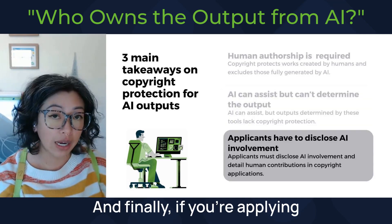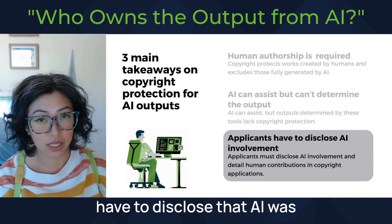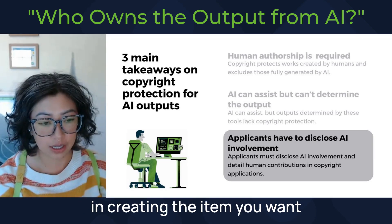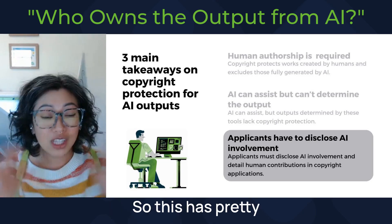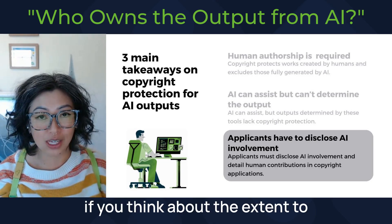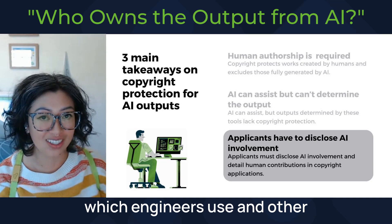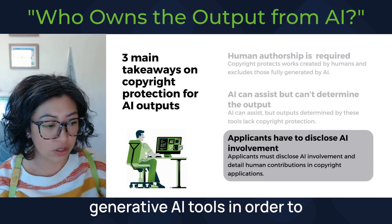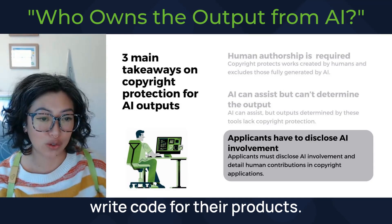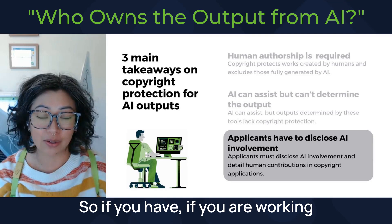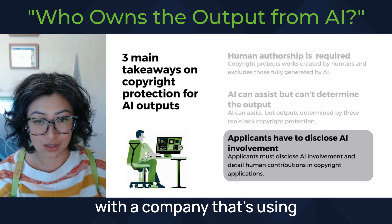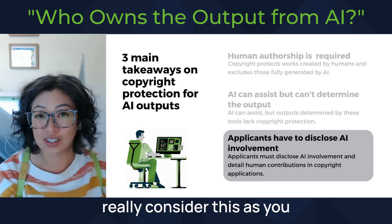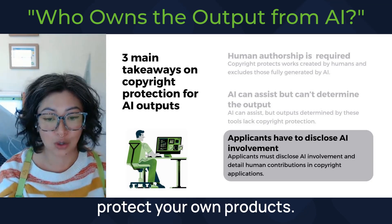Finally, if you're applying for copyright protection, you have to disclose that AI was involved in creating the item you want copyright protection for. This has pretty sweeping implications when you think about the extent to which engineers use generative AI tools to write code for their products. If you are working with a company that's using AI in their code generation, really consider this as you think about how you can protect your own products.